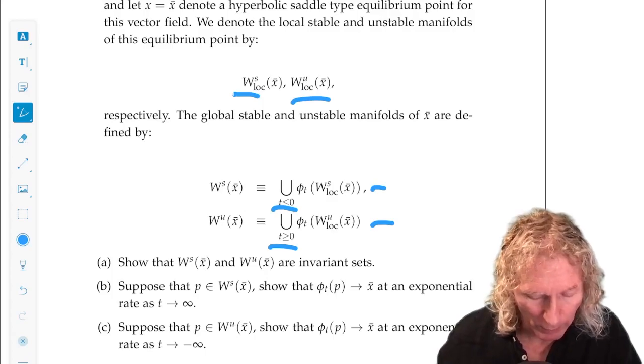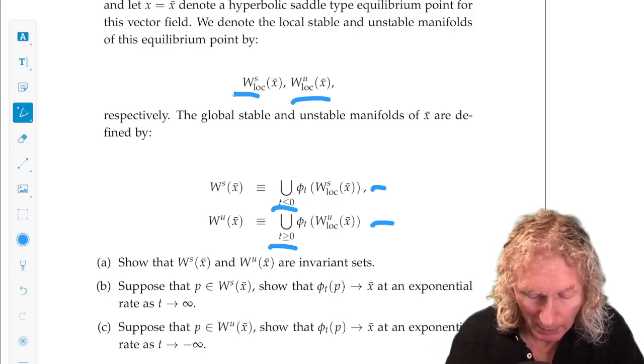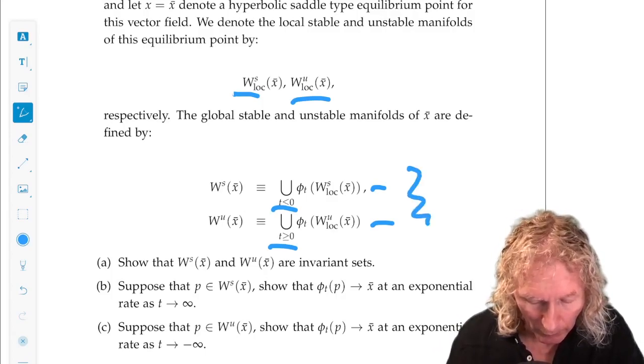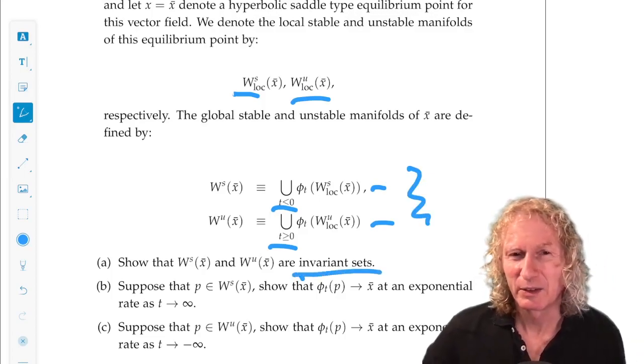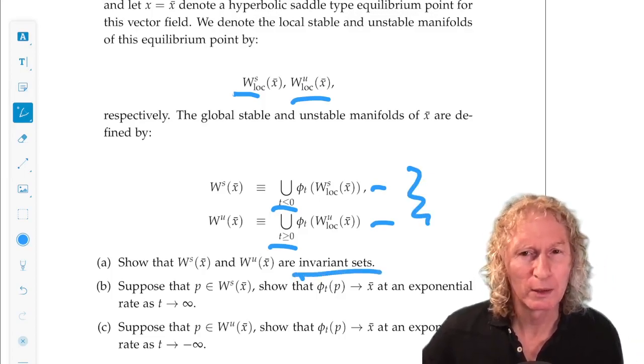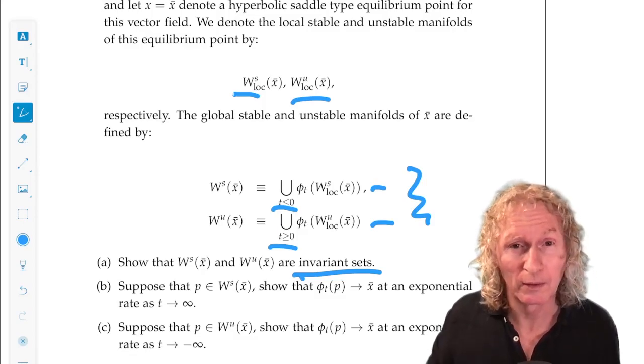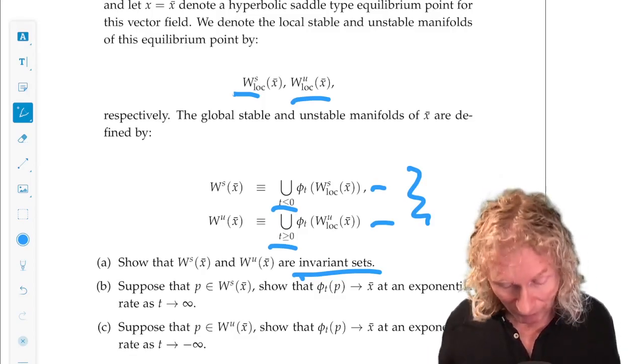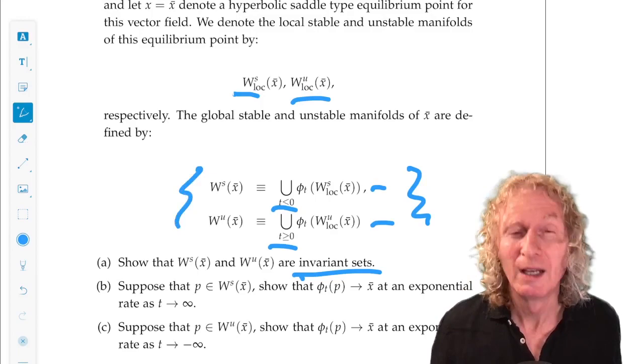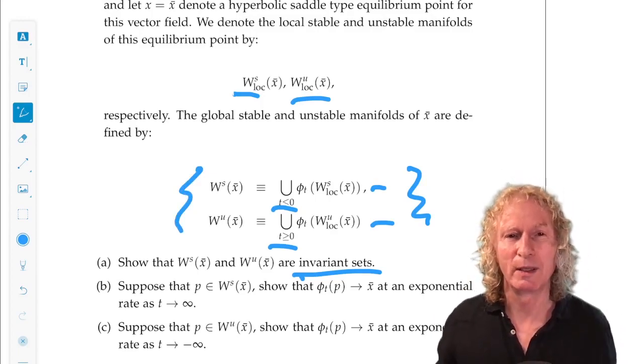Now, what I want you to show is that these global manifolds are invariant sets. That's just designed to make you think about what an invariant set is. Invariant sets are made up of trajectories. That's what we have here.